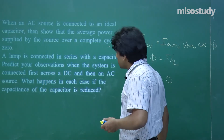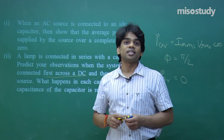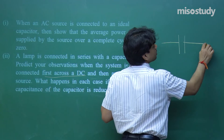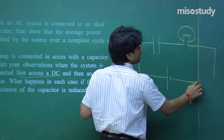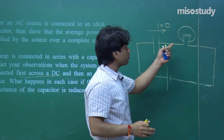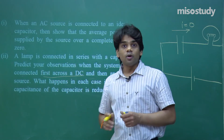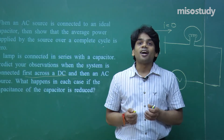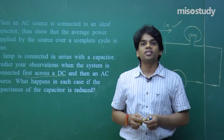Next, a lamp is connected in series with a capacitor. The system is connected first across a DC source. In the case of a DC source, no current flows through the capacitor, so no current flows through the bulb and there will be no glow. When an AC source is applied instead, current starts flowing through the capacitor, so the bulb glows.